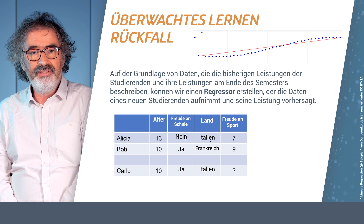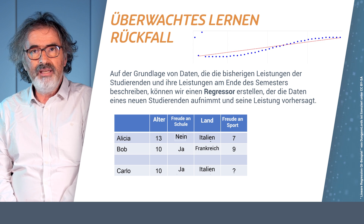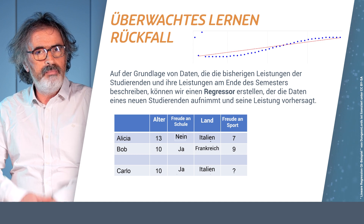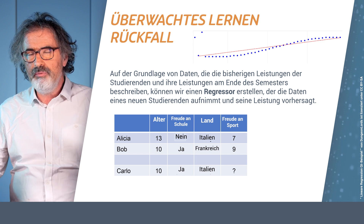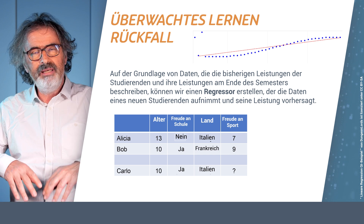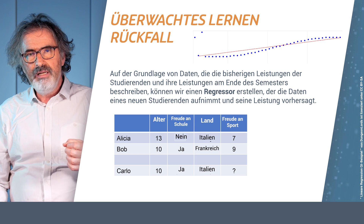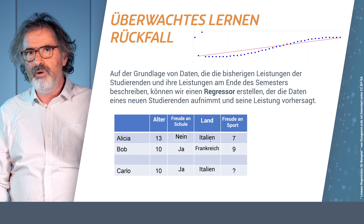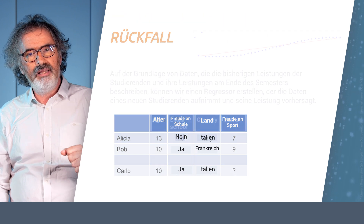Carlo has an age of 10, he likes school, and he is in Italy — is there a way of predicting his grade? This is a problem for which there may be various answers, and the answers will depend on the model we are building, so there are many different algorithms to do this. One common feature is that there is no outstanding algorithm in machine learning; many different ones exist, and some are better suited in certain cases and others in another.